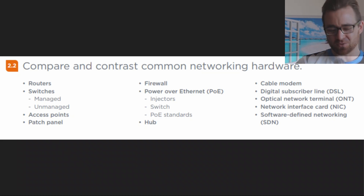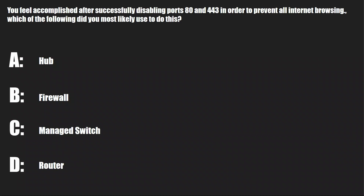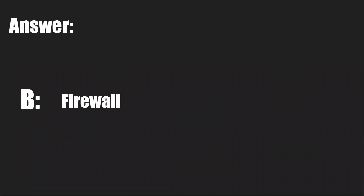Let's get straight into it with our first practice question: you feel accomplished after successfully disabling ports 80 and 443 in order to prevent all Internet browsing. Which of the following did you most likely use to do this? A, a hub; B, a firewall; C, a managed switch; or D, a router? And the answer is B, a firewall.